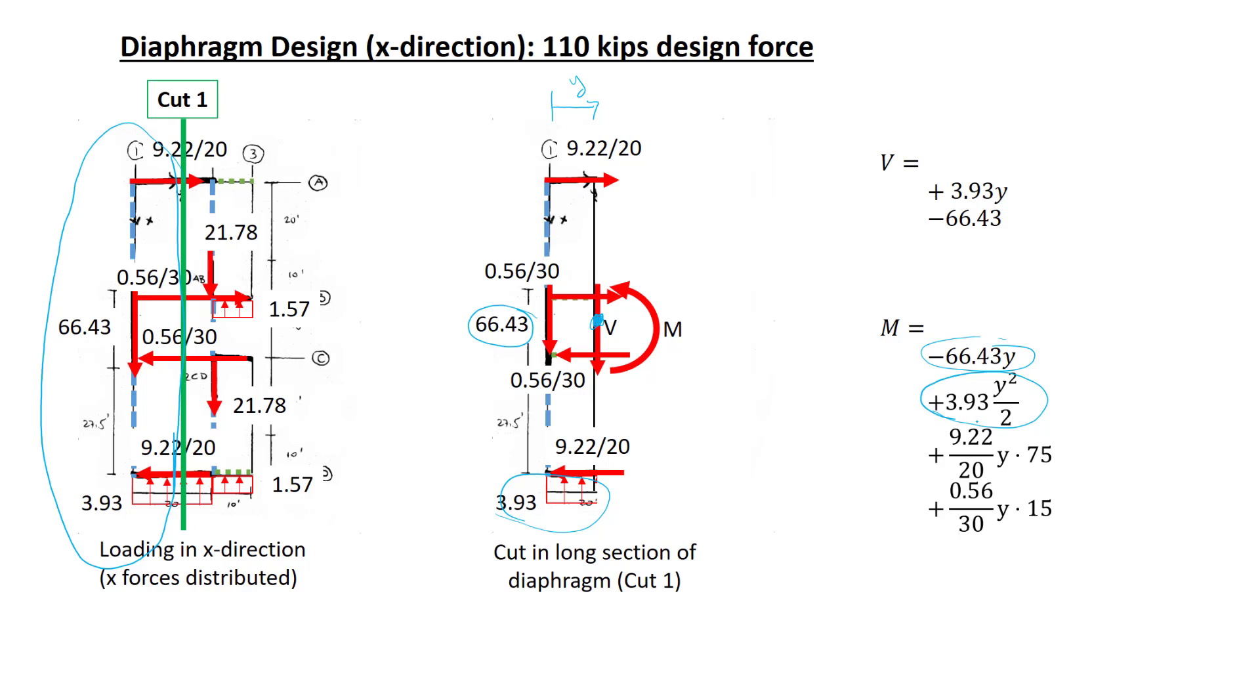Next, I'll look at the horizontal forces. Looking at the couple with the 9.22 kips per 20 feet, the total force is 9.22 over 20 times y. The moment arm for that couple is that 75 feet. And now the other force, this is the distributed load of 0.56 over 30. Multiply that by y to get the force. Multiply that force by the moment arm to get the moment.